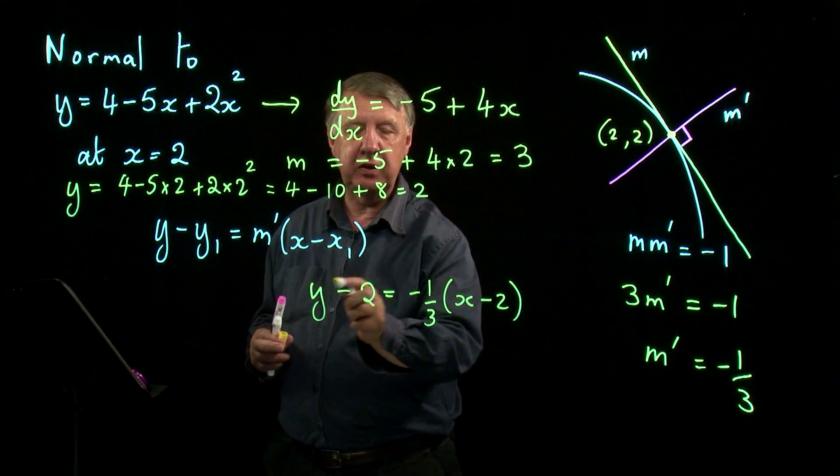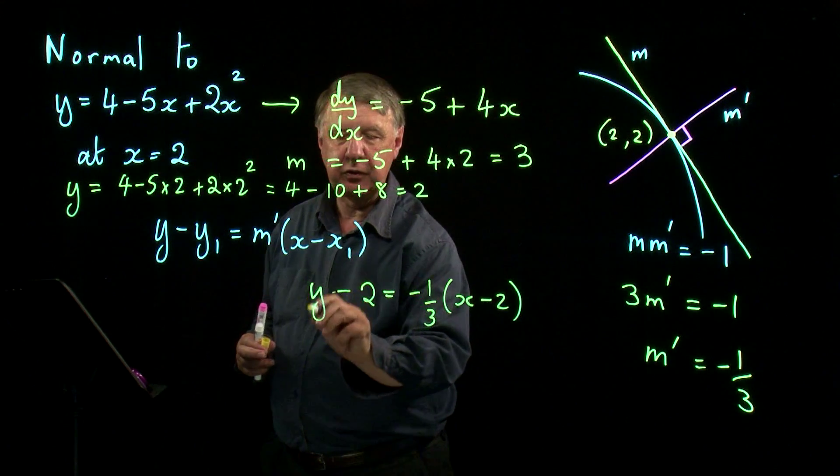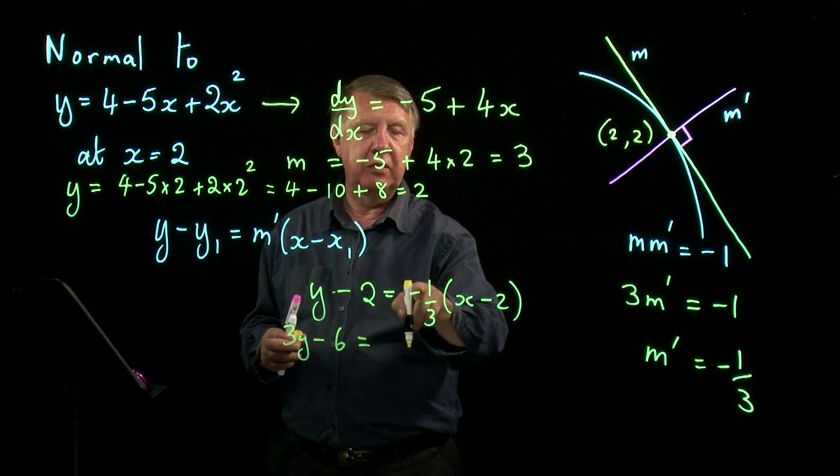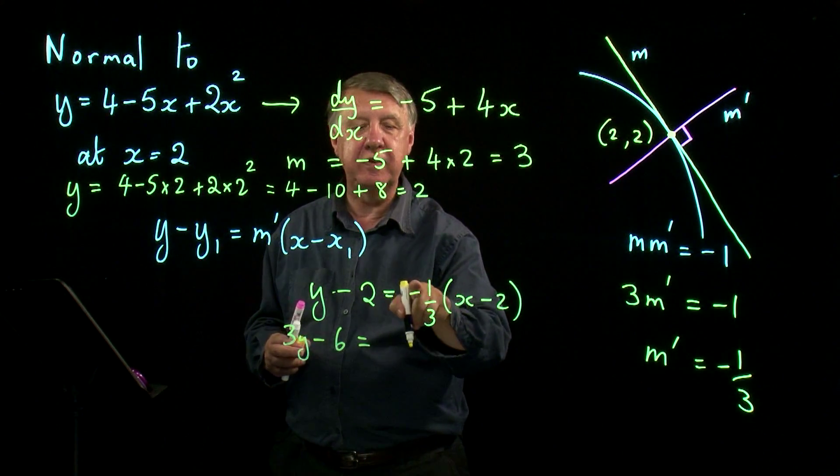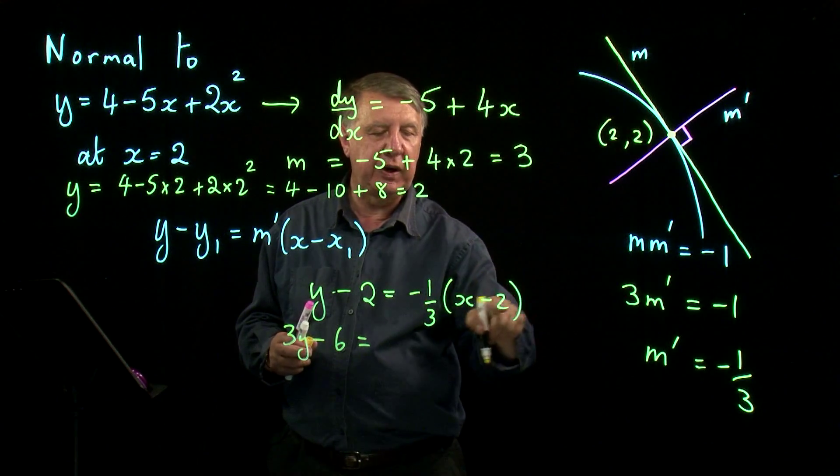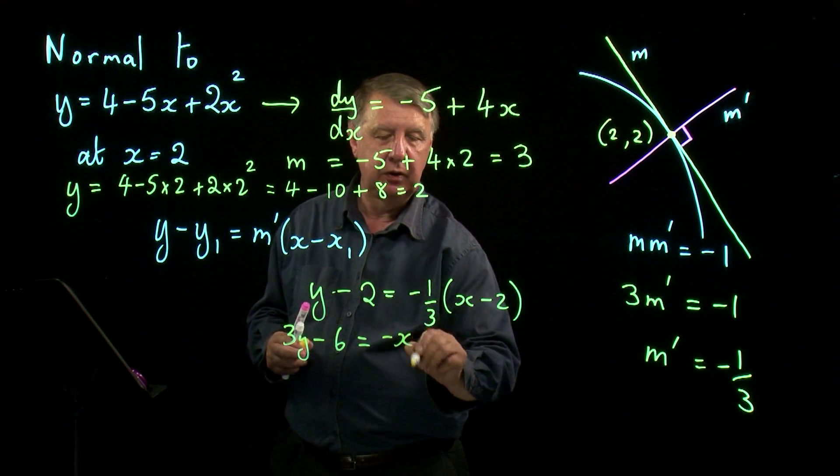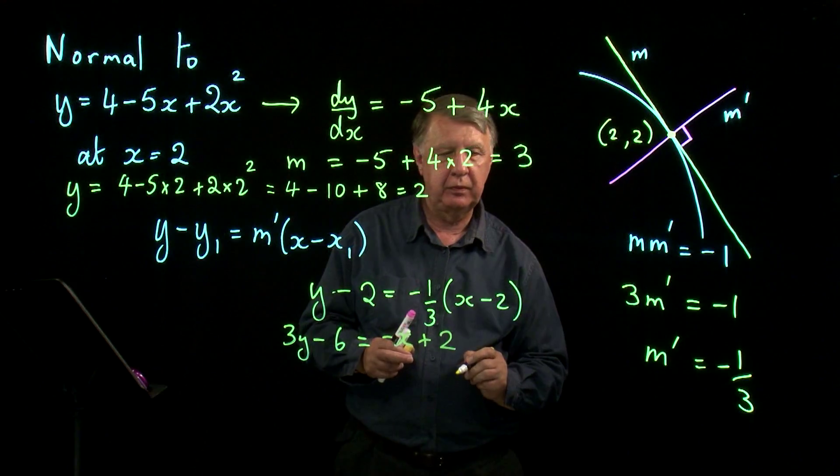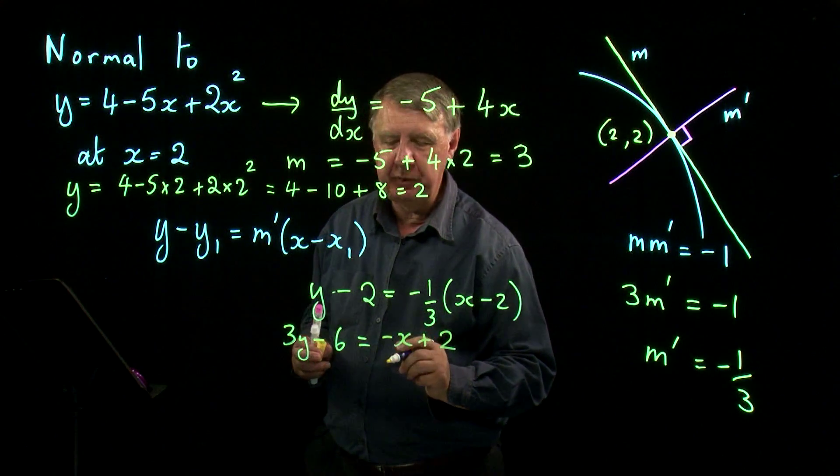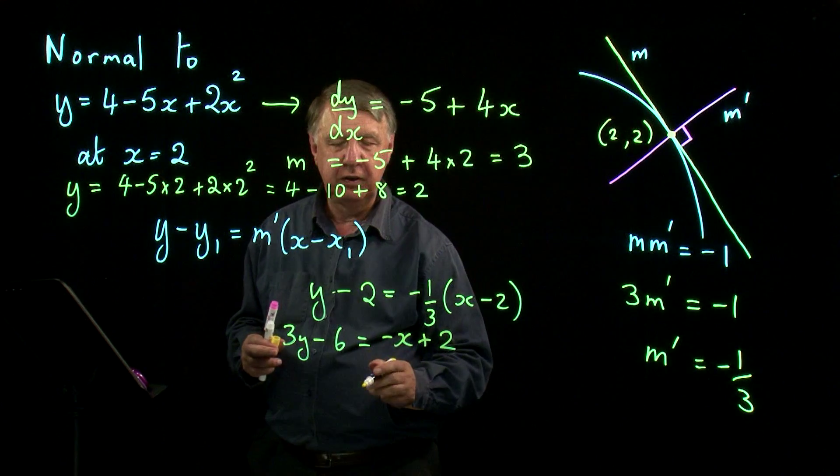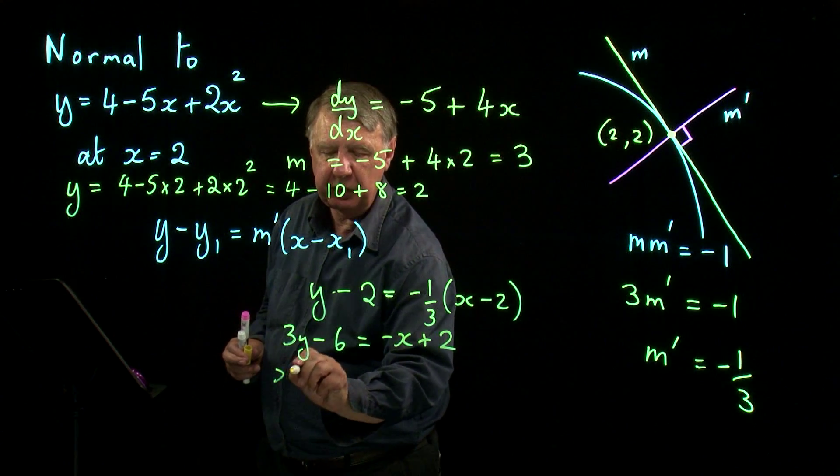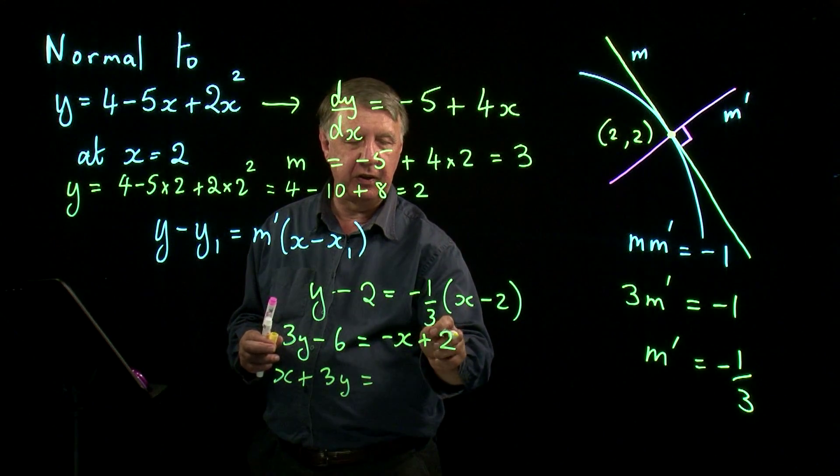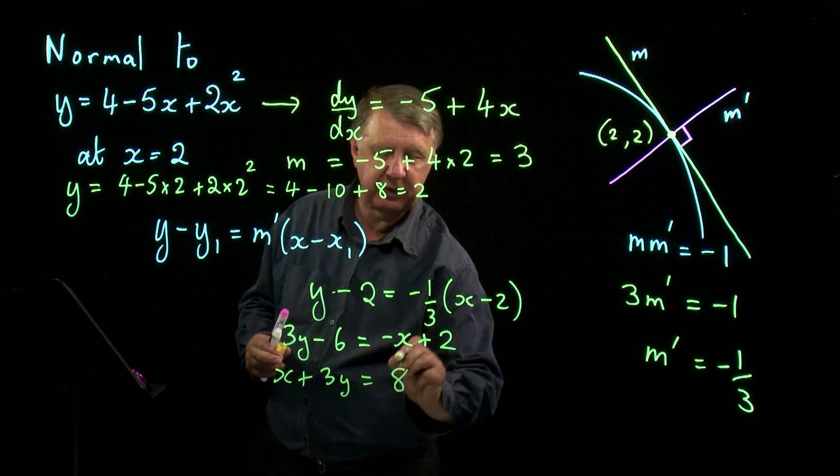Well the easiest way is to multiply this side by 3 first of all. So 3y take away 6 equals, remember it's just the 3 that you're taking so there's still the negative 1 there, negative 1 in front of the bracket will be negative x, negative negative 2 is plus 2. And assuming I haven't been asked a particular form to write the answer in, I'm going to put the x on this side so I think we'll have x plus 3y. And I quite like the idea of putting the negative 6 on this side to make it plus 6. 2 plus 6 is 8.